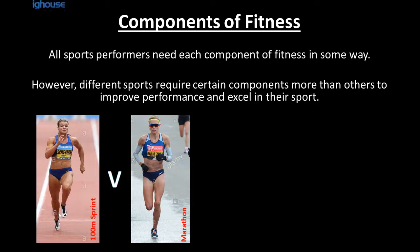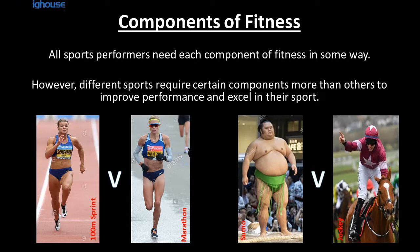If we take two runners — a 100-metre sprinter and a marathon runner — although they're both running, the sprinter would clearly need a higher level of speed and power, whereas the marathon runner would need more cardiovascular endurance. In the example of the sumo wrestler and the jockey, the sumo wrestler would obviously need a higher proportion of fat, which comes under body composition, whereas the jockey needs a lower level of fat so that they're lighter on the horse.